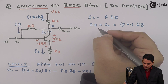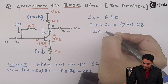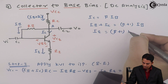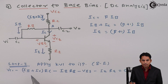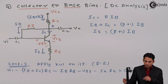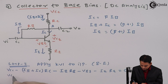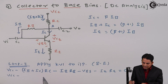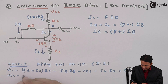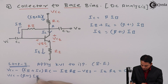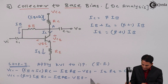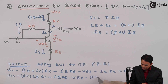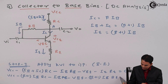We know that IE can be written as beta plus 1 times IB, since IE equals IB plus IC. Now wherever there are terms like IB plus IC or IE, replace them with beta plus 1 times IB. The equation becomes: VCC minus (beta plus 1) times IB into RC minus IB into RB minus VBE minus (beta plus 1) times IB into RE is equal to zero.